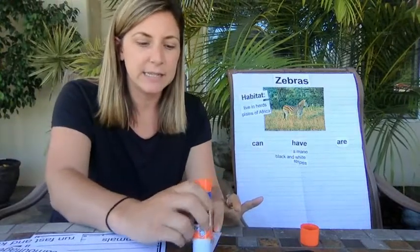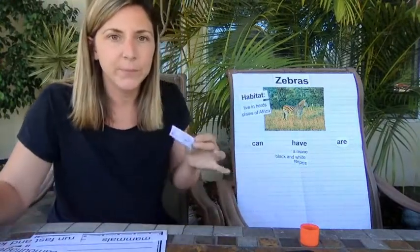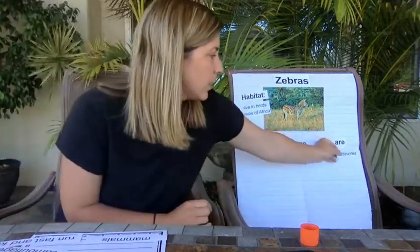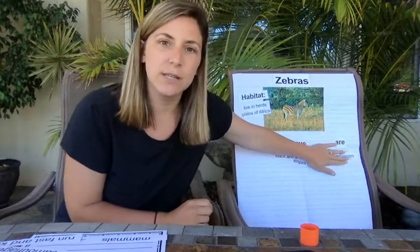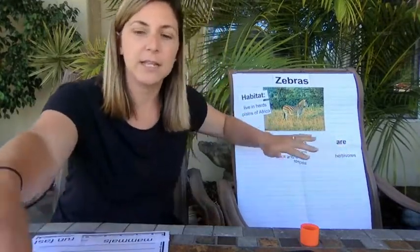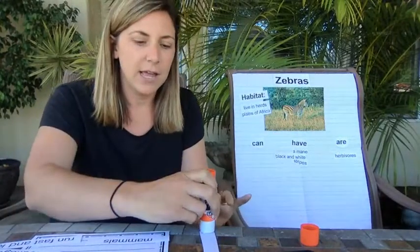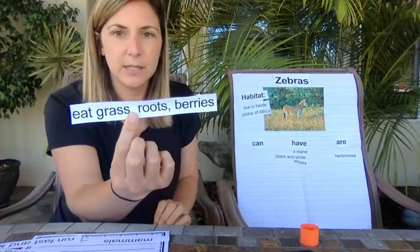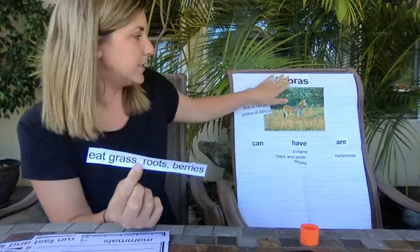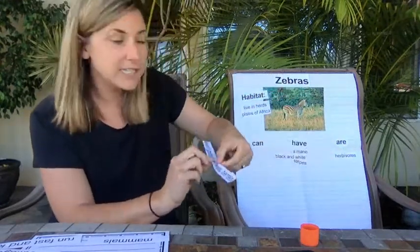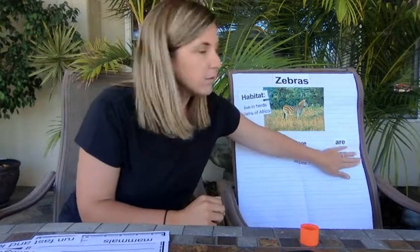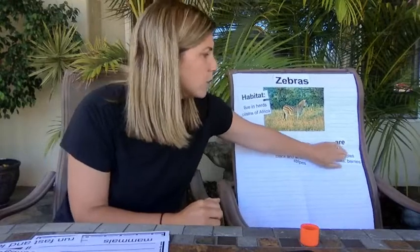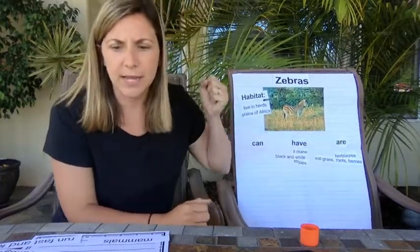Do you know what zebras eat — meat or plants? They eat plants, so they're called herbivores. Zebras are herbivores. They eat grass, roots, and berries. To make that sentence stronger: zebras are herbivores that eat grass, roots, and berries. I'm going to put those together so I can write them in one stronger sentence.